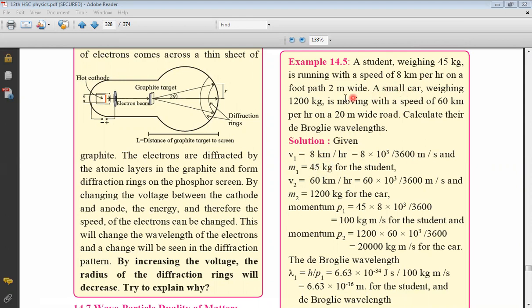Coming further to the car, mass of the car is 1200 kg, M2. And its velocity is 60 km per hour, which is 60 into 5 by 18 or 60 into 1000 by 3600 meter per second.